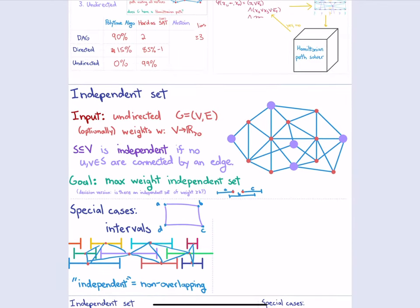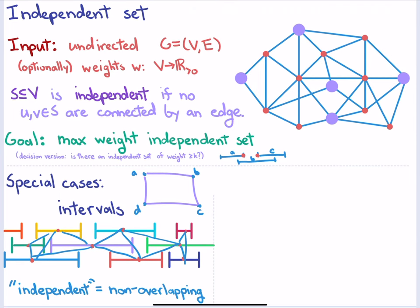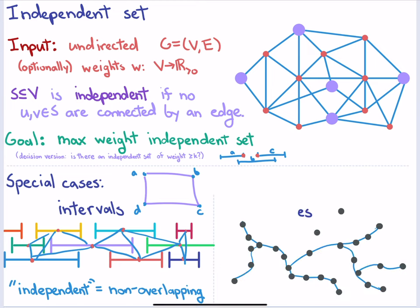That's our first special case: graphs induced by intervals, where we can do weighted independent set with interval weights. The second special case is trees — a special case of graphs with no cycles. We'll look at whether the problem is hard or has an efficient algorithm on trees. So the three settings are: general graphs, interval graphs, and trees.